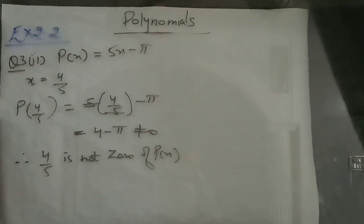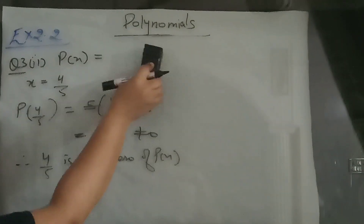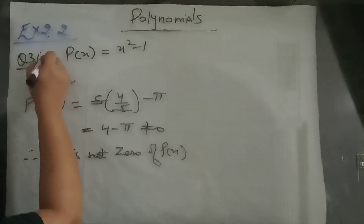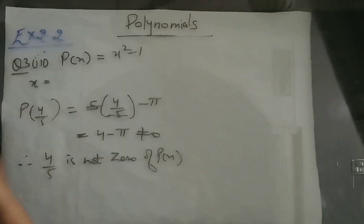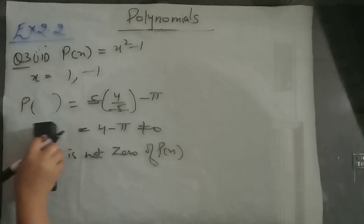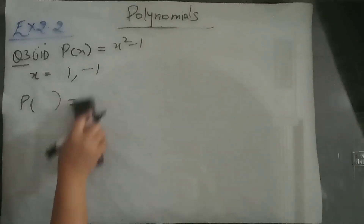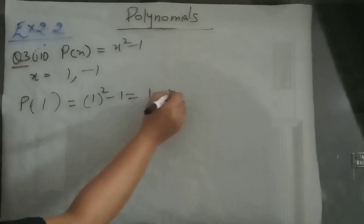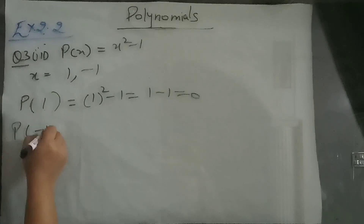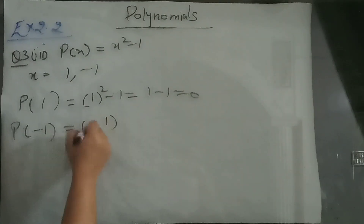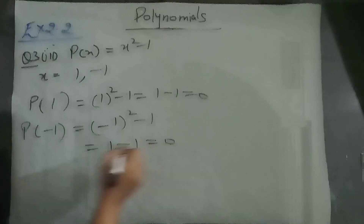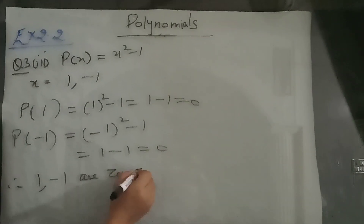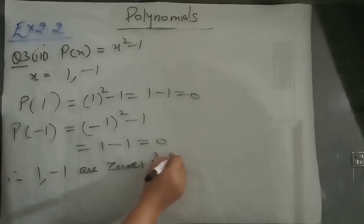Third part: p(x) = x squared minus 1, and x is 1 and minus 1. We have to verify whether they are zeros. Put p of 1: 1 squared minus 1 is 0. Put minus 1 in place of x: minus 1 squared is 1, minus 1 gives 0 again. So we can say 1 and minus 1 are zeros of p(x).